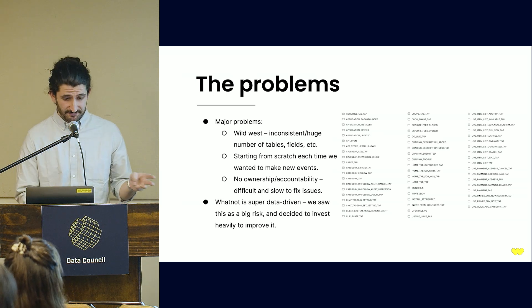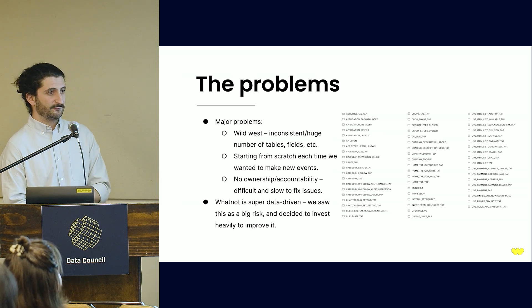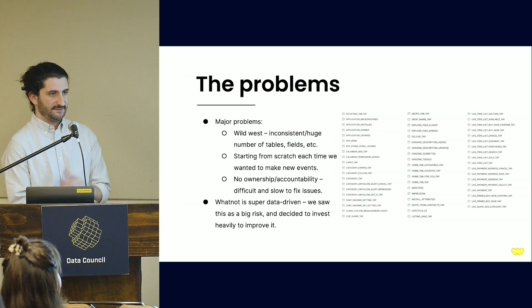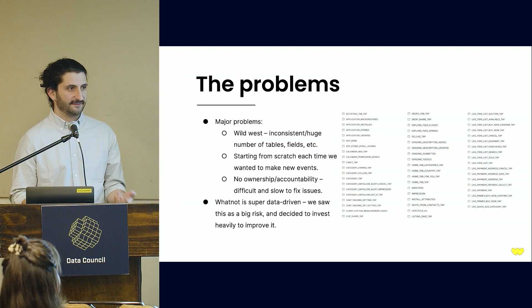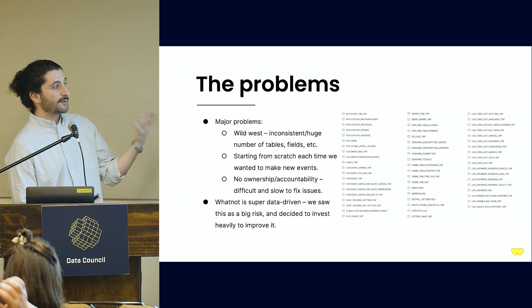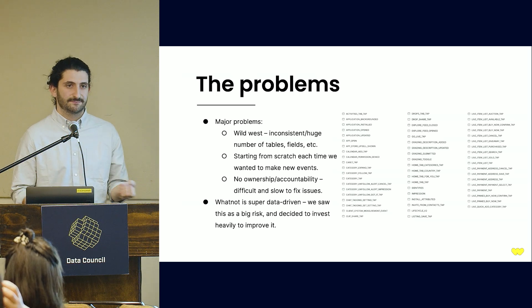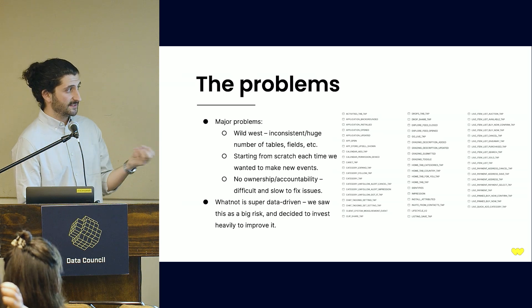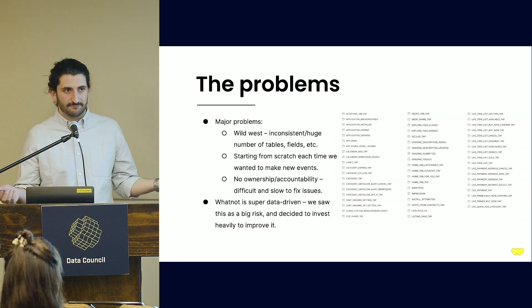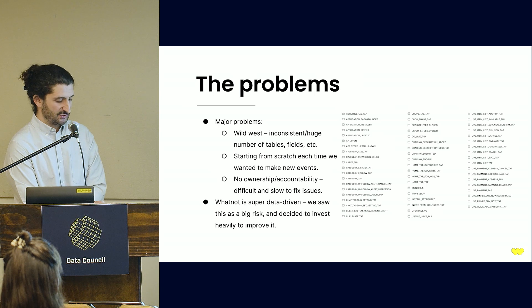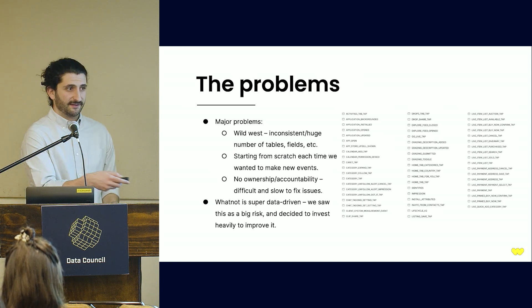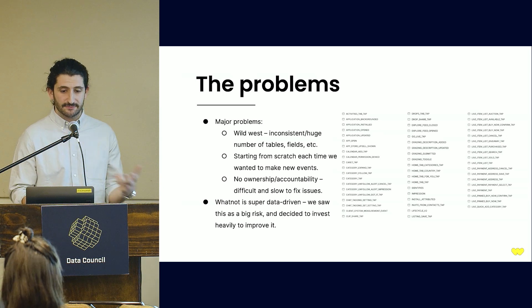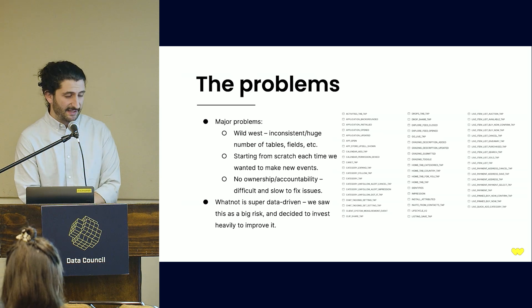The third problem is ownership. Software that emits events is just like any other software — it's going to have bugs, it's going to be wrong sometimes. And when you notice those issues, it's important that you get them fixed. In order to get things fixed, you need to be able to trace them down to somebody who can fix them. We noticed this issue and felt it was a very big problem, so we decided to do something about it.